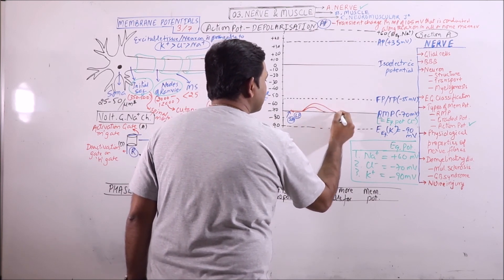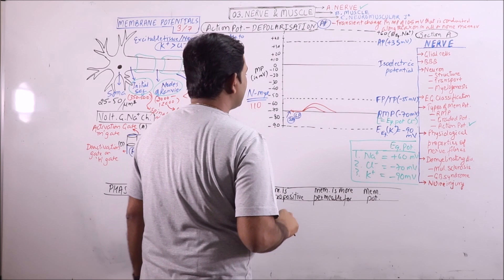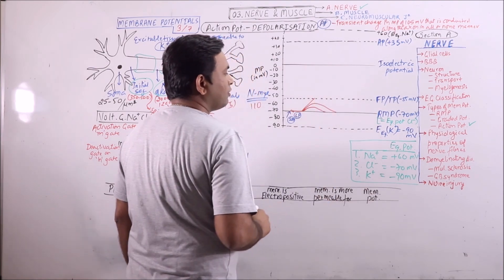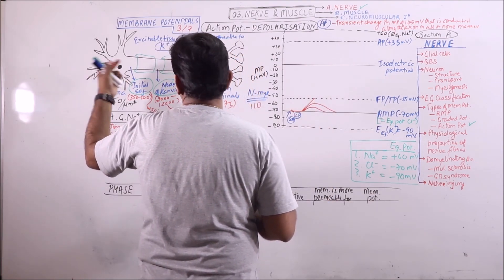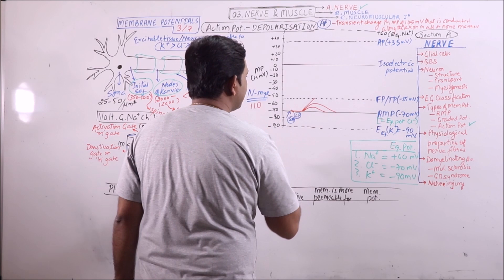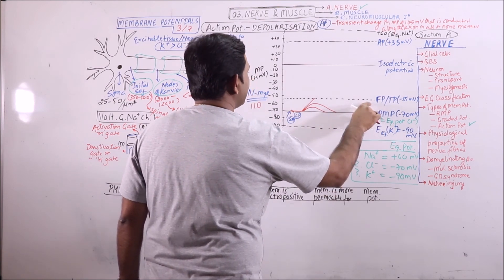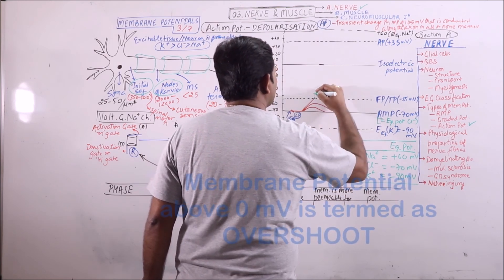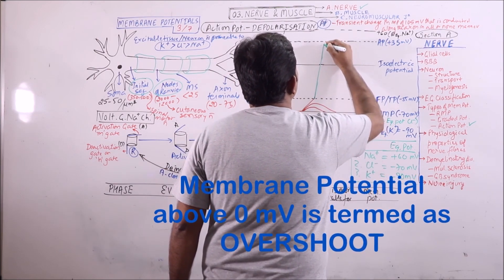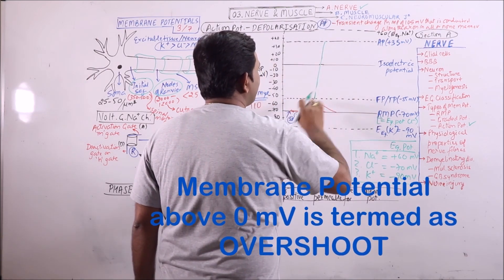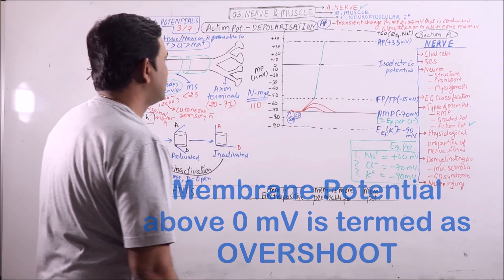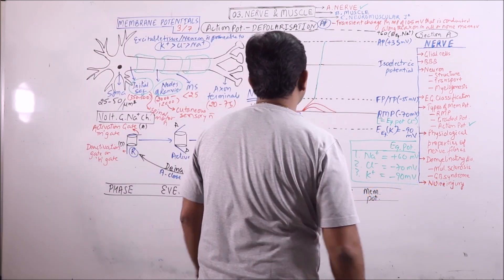If we increase the stimulus, then the graded potential will be increased, but still it may not be sufficient. If a sufficient number of mechanically gated sodium channels are stimulated, then a sufficient quantity of sodium will enter the neuron, and there will be sufficient depolarization which will increase above the level of firing potential. As soon as the firing potential is reached, there is a sudden opening of voltage-gated sodium channels, which will raise the depolarization of membrane potential up to the value of plus 35 millivolts — the peak of action potential.